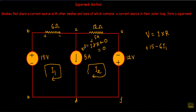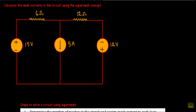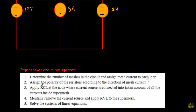Now I will show you an example of super mesh analysis: calculate the mesh currents in the circuit using the super mesh concept. In this circuit, between mesh one and mesh two there is an independent current source of 5 amperes, so this circuit will form a super mesh. Step one: determine the number of meshes in the circuit and assign a mesh current to each independent loop.